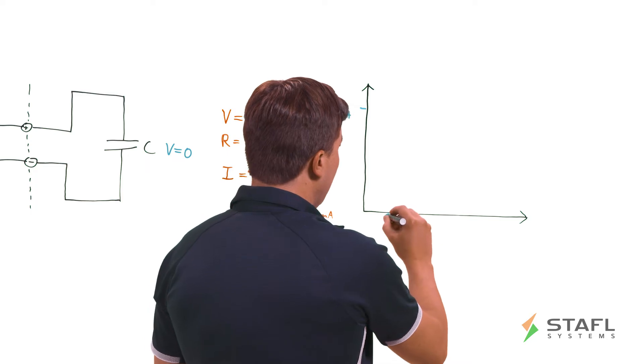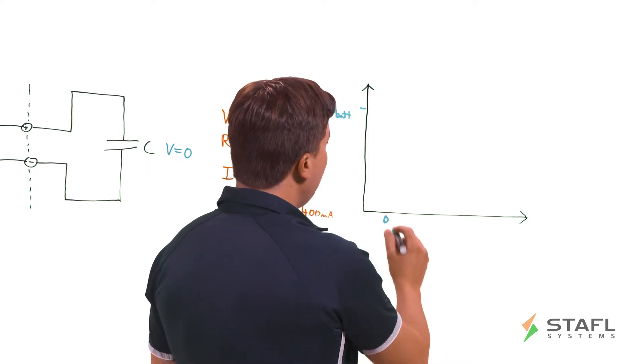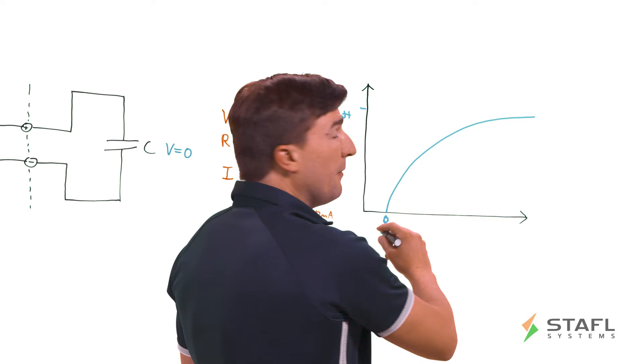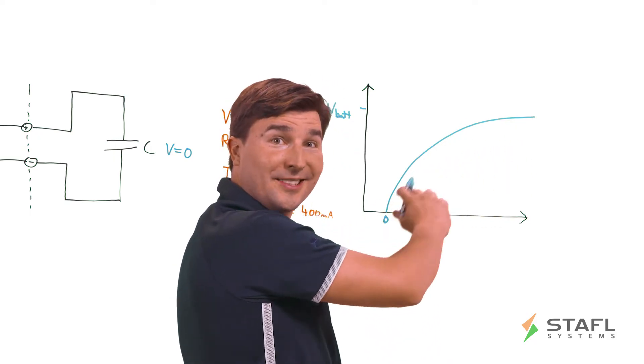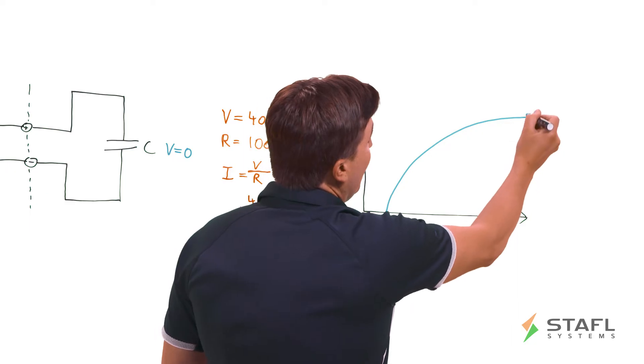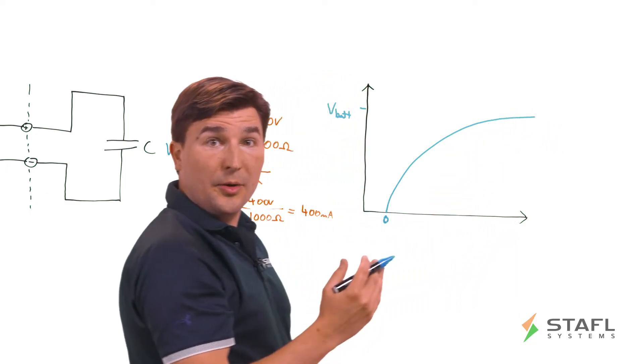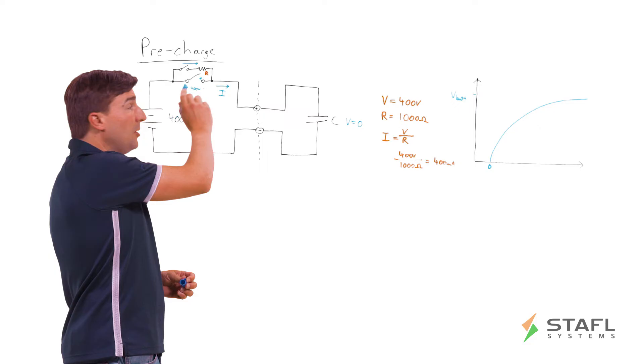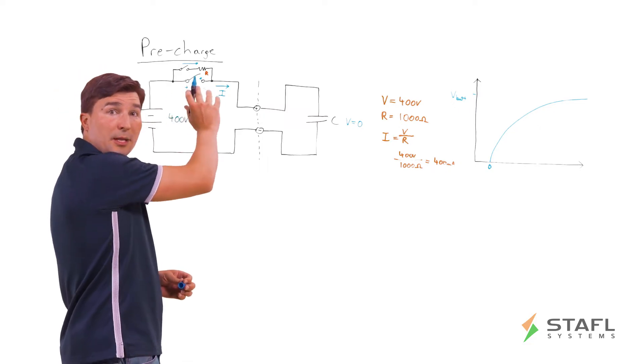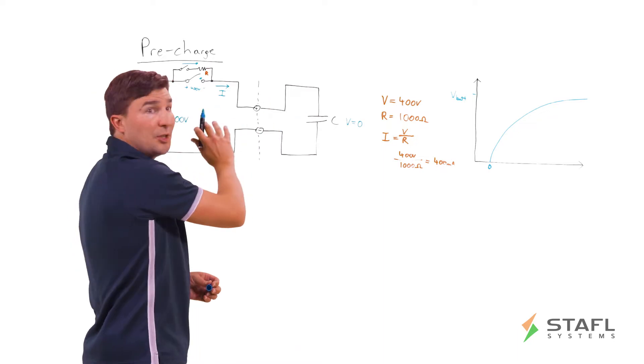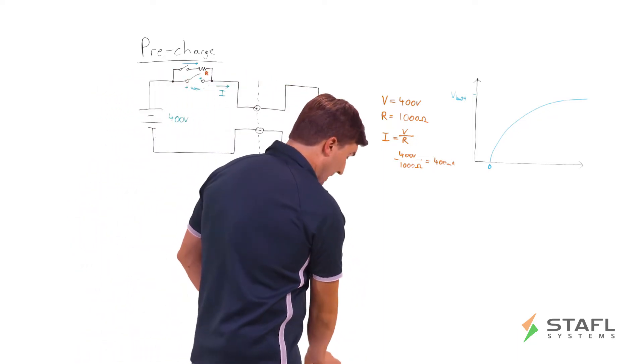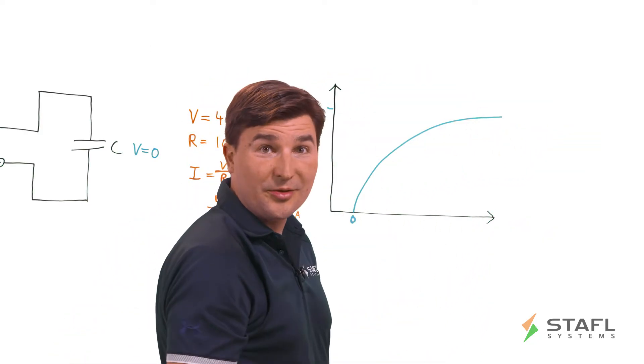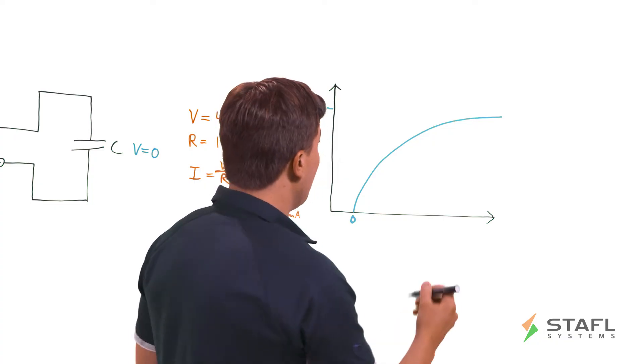And the way that works is that at T equals zero, we close the pre-charge circuit switch and we start charging the capacitor. And it follows an RC time constant, resistor capacitor time constant, until it gets to a close enough bound with the battery voltage that we can now close the main disconnect relay or contactor and have minimal inrush current and minimal sparking and minimal thermal and high current flow damage issues that we mentioned before. So how long does this curve need to charge? How long does this capacitor need to charge for us to feel comfortable closing the main contactor switch?